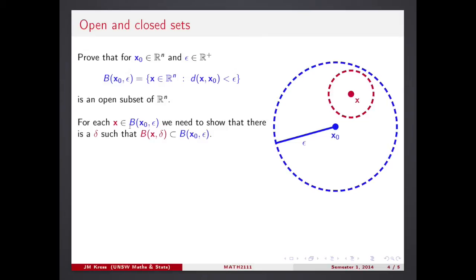So for each x in my ball, that's a randomly chosen point x, we need to show that there is another ball of some other radius delta, that's the symbol for this radius, such that this ball belongs to this blue ball, the original one, in its entirety. This symbol says subset. So look what we do.